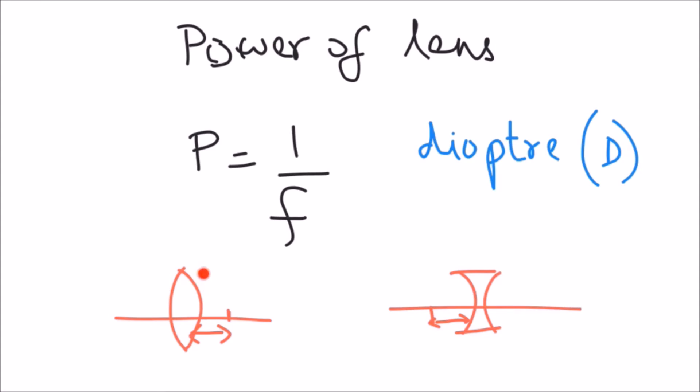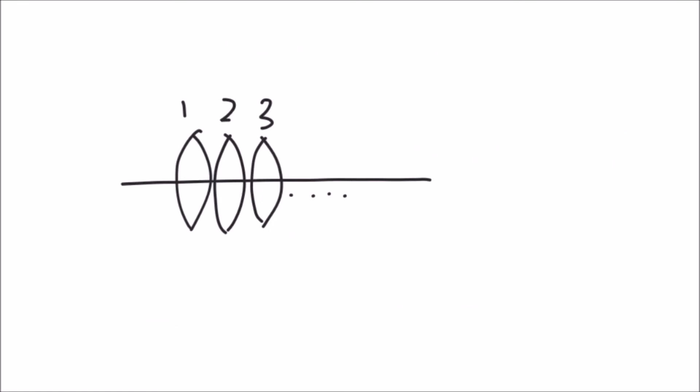Power of a convex lens is positive as its focal length is positive whereas for a concave lens, focal length is negative and hence the power is also negative. We can have multiple lenses together for various applications and its cumulative power will be the summation of individual powers.